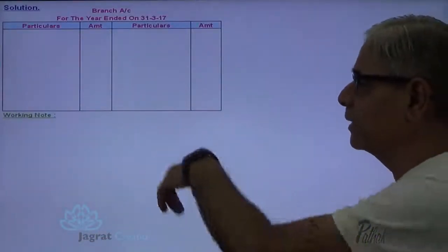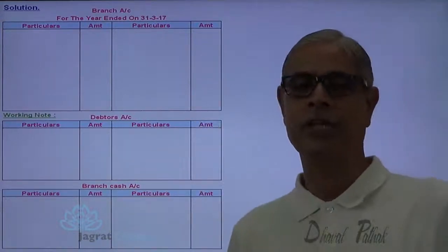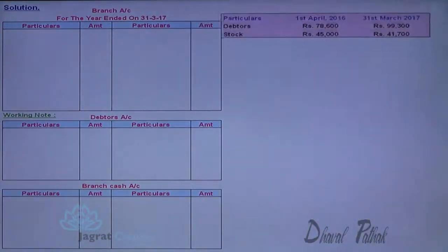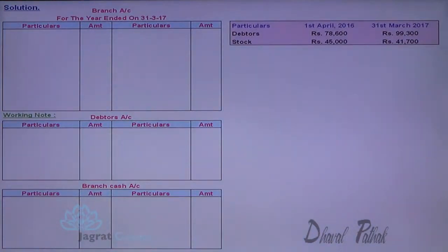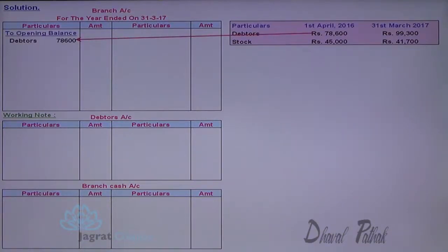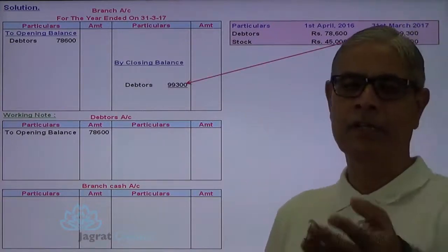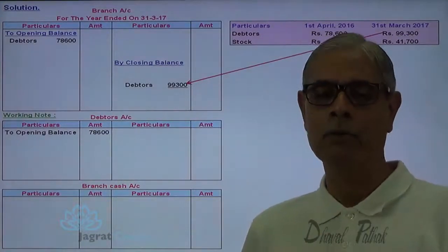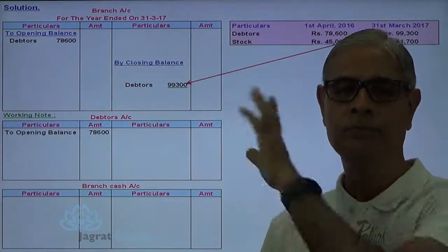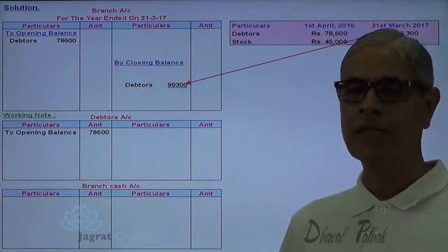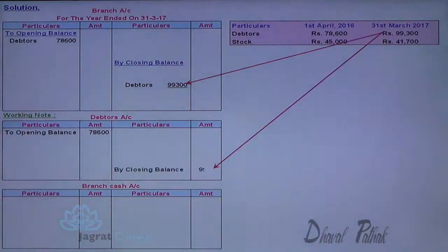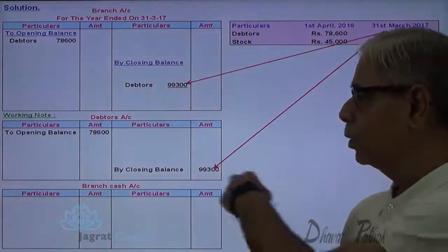This is the branch account. Here is the debtors account that I prepared in my working note, and here I prepare the branch cash account. Debtors at the beginning of the year are given to the branch — branch account debit to debtors account credit. The same debtors opening balance is recorded in the debtors account as the opening balance. The closing balance of debtors is recorded to the credit side of the branch account, as debtors are absorbed by the head office — branch debtors account debit to branch account credit. The closing balance of debtors is recorded in the debtors account in this fashion.